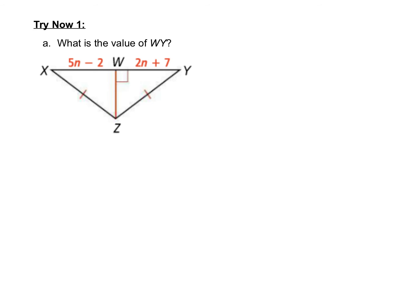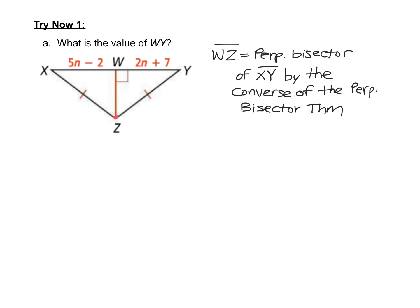These try-nows are a little different from the example we just looked at. Pause the video if you'd like to try on your own first. The first thing to notice is that point Z is equidistant from the endpoints of the segment — ZX and ZY are congruent. By the converse of the perpendicular bisector theorem, WZ is the perpendicular bisector of XY. Since WZ is the perpendicular bisector, XW must equal YW.